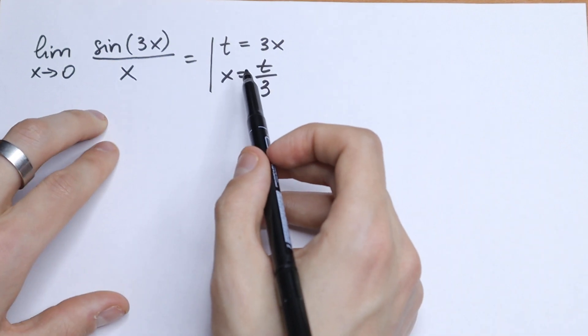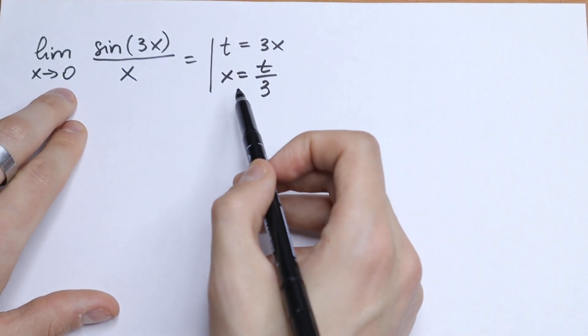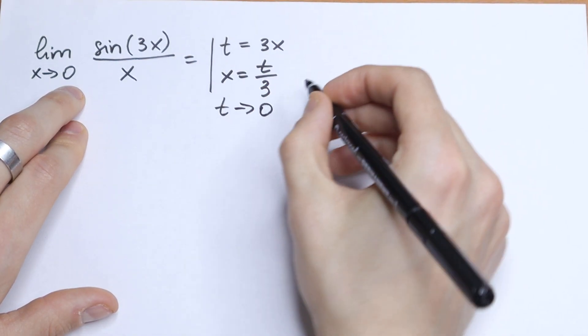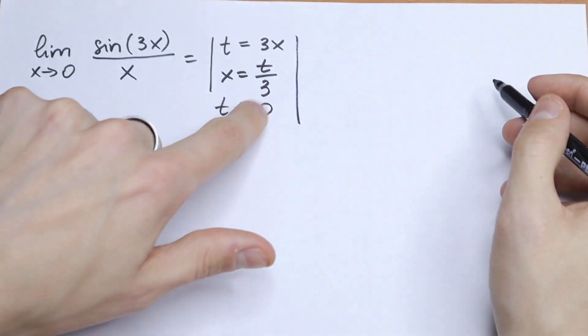And of course from here, if x approaches 0, our t approaches 0 as well. So t goes to 0. So this is our substitution.